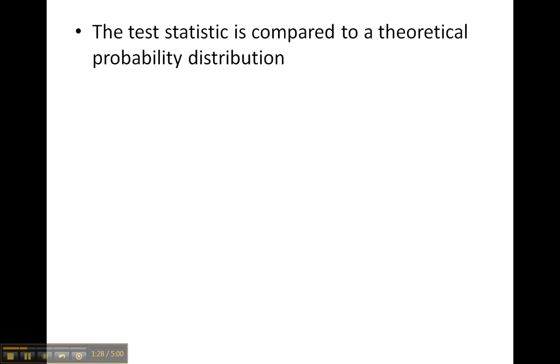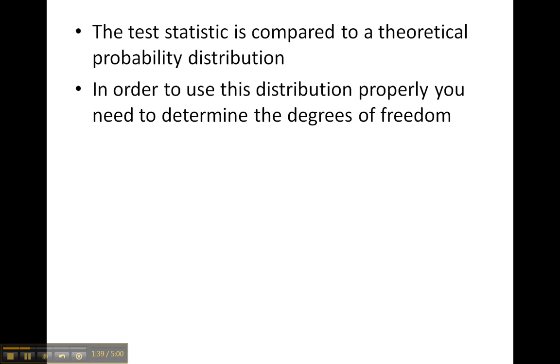We calculate the number for the chi-squared test, and then we compare it to a table of distribution of probability, and in order to do that, we need to know the number of degrees of freedom.